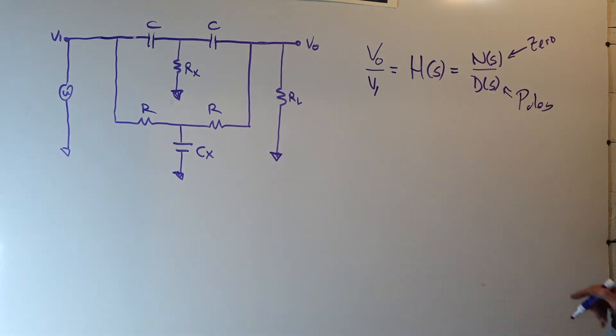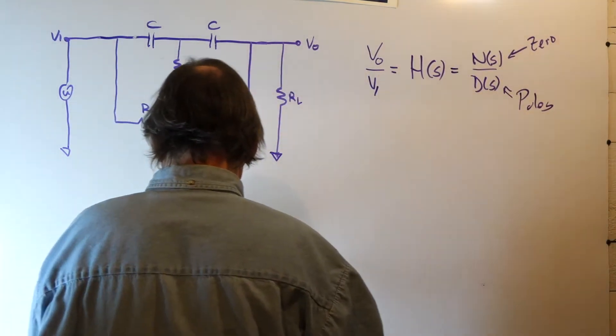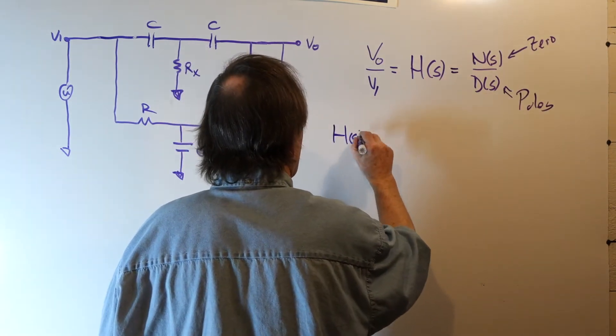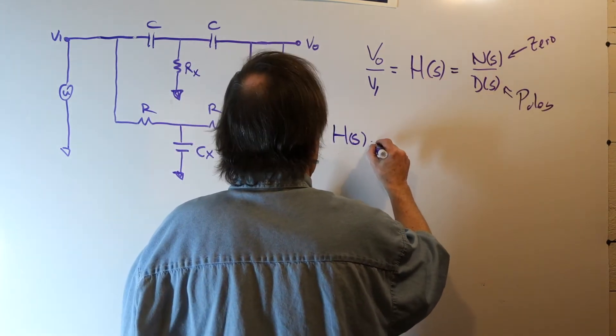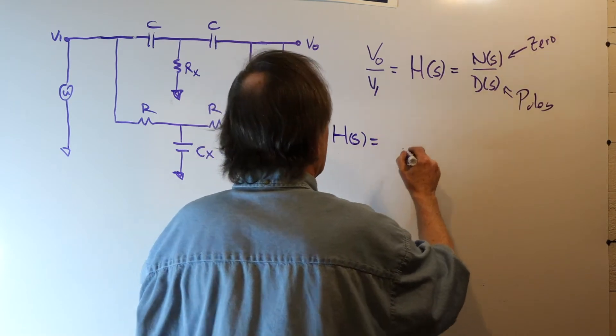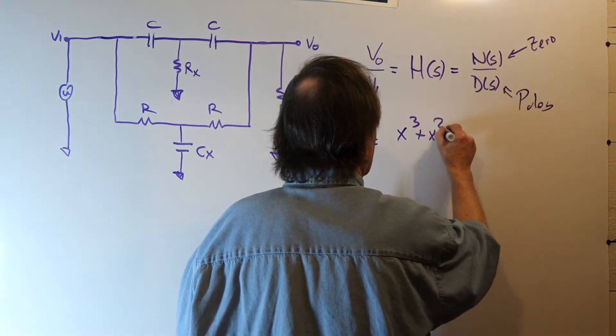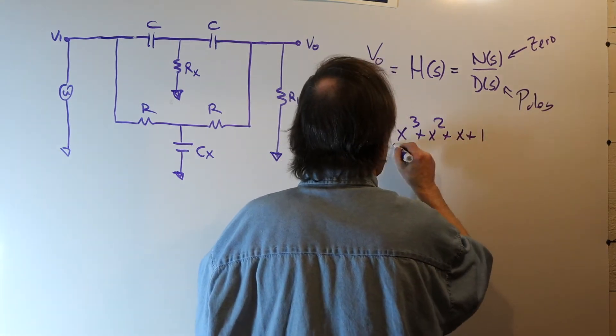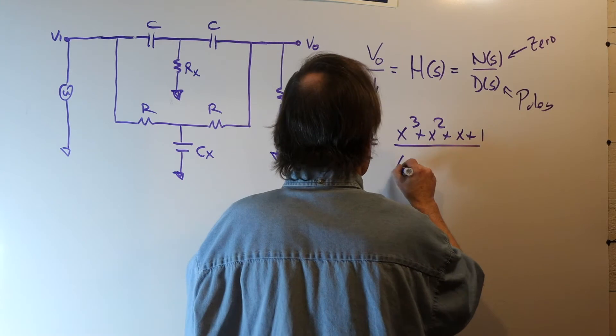With proper choice of RX and CX, this transfer function has this form. I'll give you a little hint here. It's a third order network, both in the numerator and in the denominator.